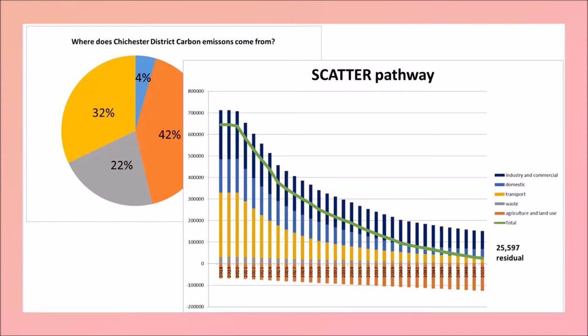This is just a modeling tool — it's not what the District Council are advocating, it's just to help illustrate how to achieve their five-year target. You have all four sectors, and agriculture is negative below the axis. The green line is the sum of all emissions including agriculture, showing that by 2050 there's still a residual 25,500 tons of carbon emissions.